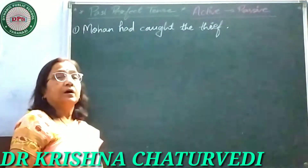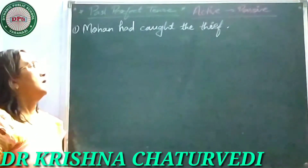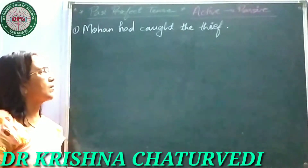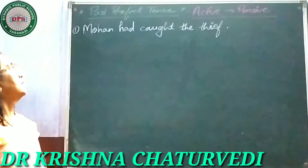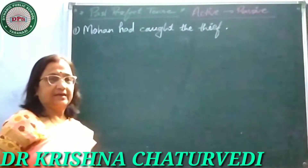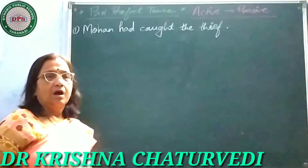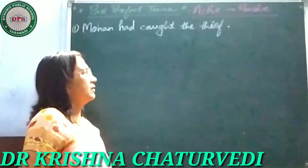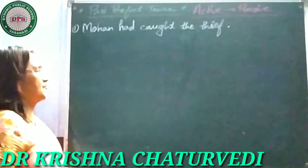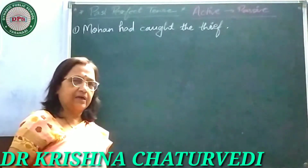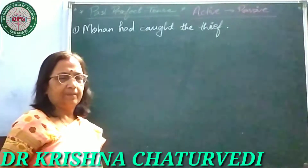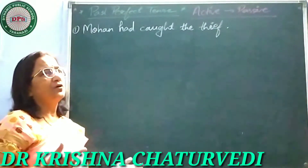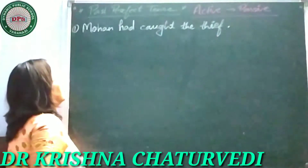Hello students, continuing the same topic: how to transform sentences from active voice to passive voice. Today we have to study past perfect tense. Up to present perfect tense we have already studied. The basic rules are the same — first of all you have to find out subject, verb, and object. Now let us see: 'Mohan had caught the thief.'